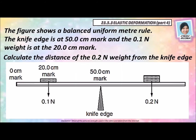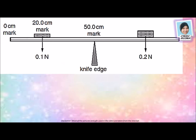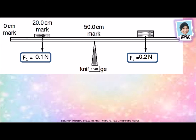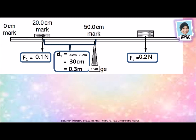Here is an example. The figure shows a balanced uniform meter rule — balance means equilibrium — so we use the principle of moments. The knife edge is at the 50 cm mark and the 0.1 Newton weight is at the 20 cm mark. We need to calculate the distance of the 0.2 Newton weight from the knife edge. The knife edge is the pivot. The distance from the pivot to F1 is D1 = 50 cm minus 20 cm = 30 cm. Remember to convert cm to meter: 30 divided by 100 gives 0.3 meter.